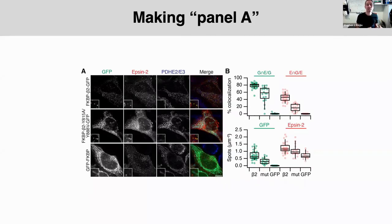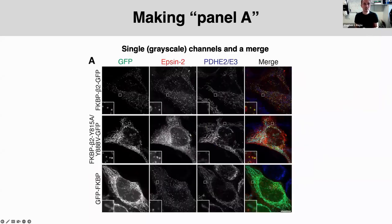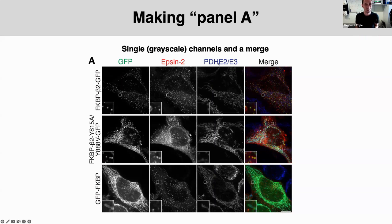We've taken the images; now we need to make panel A — the example data. The best practice is to show individual grayscale channels for each thing imaged, then on the right a merge where they're combined in red, green, and blue corresponding to the fluorophores used. The spacing between images in the same condition is smaller than spacing between rows of different conditions, which is a simple aesthetic choice to show which images relate to which condition.